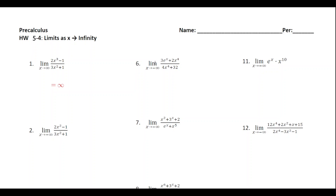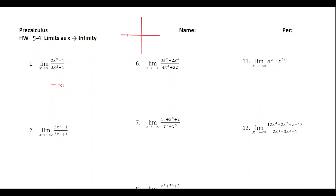For number one, it's just a regular rational function and we see that the degree on top is larger than the degree on the bottom. So as x approaches infinity, the value of the function will be going up to infinity. If number one said x approaches negative infinity, it would be approaching negative infinity.